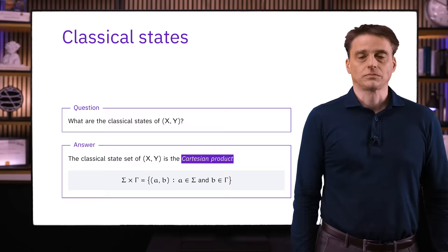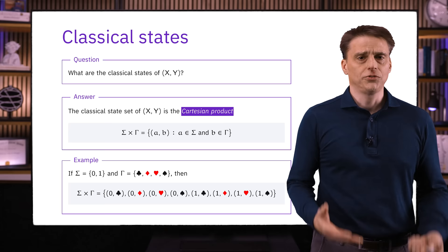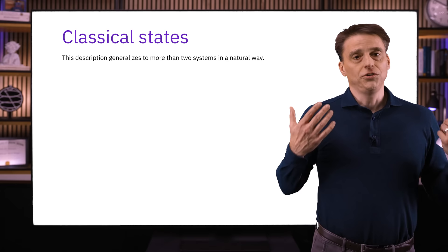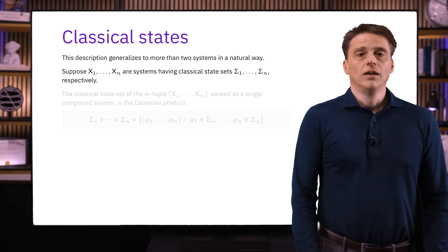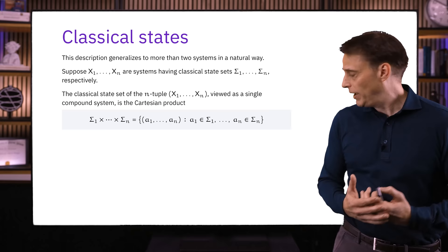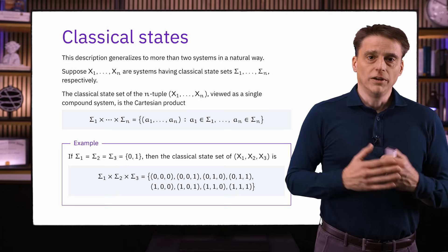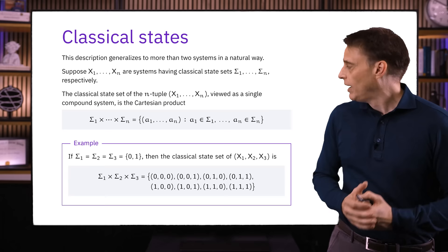Here's a simple example where sigma is the binary alphabet and gamma is the set containing the four card suits. If X stores a binary value and Y stores one of the four card suits, then there are eight possible classical states of the pair X, Y. For more than two systems, this generalizes in a straightforward way. If X1 through Xn are systems having classical state sets sigma_1 through sigma_n respectively, then the classical state set of the compound system is the Cartesian product of the n classical state sets sigma_1 through sigma_n. For example, if we have three systems all sharing the binary alphabet, so we have three bits, then there are eight possible classical states of the three bits viewed together as a single system.